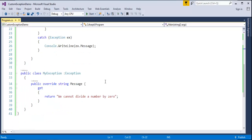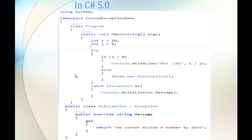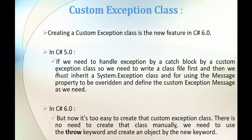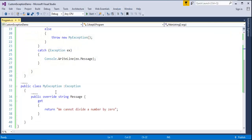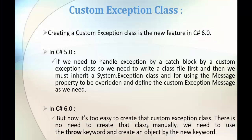This is how we used to do it in C-Sharp version 5. Now let us jump back to the slide and see how in C-Sharp version 6 we can create a custom exception class. In C-Sharp version 6 it is very easy — there is no need to create that class manually. In v5 we created it manually, editing and creating a property called message. In C-Sharp version 6, it is not necessary to explicitly create the custom exception class; Visual Studio does it for us. We just need to use the throw new keyword and create an object.